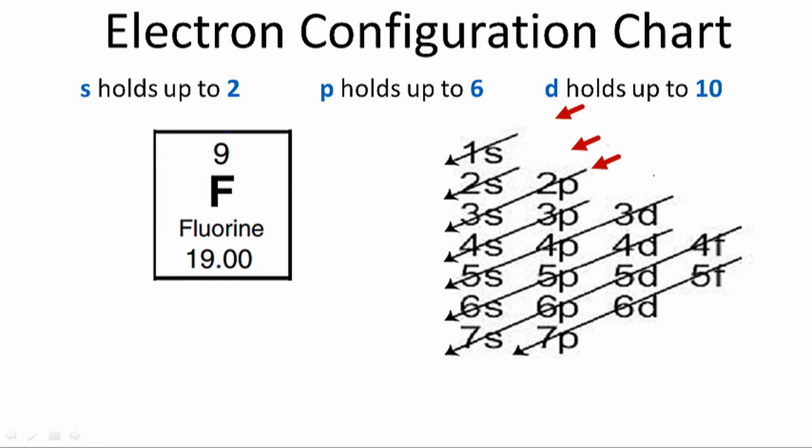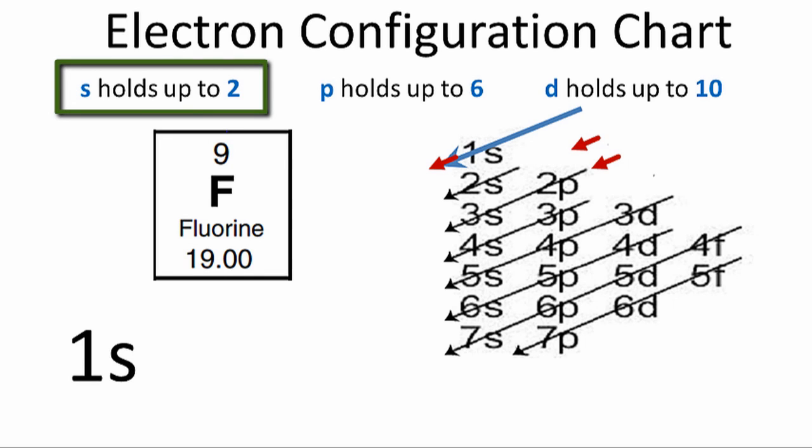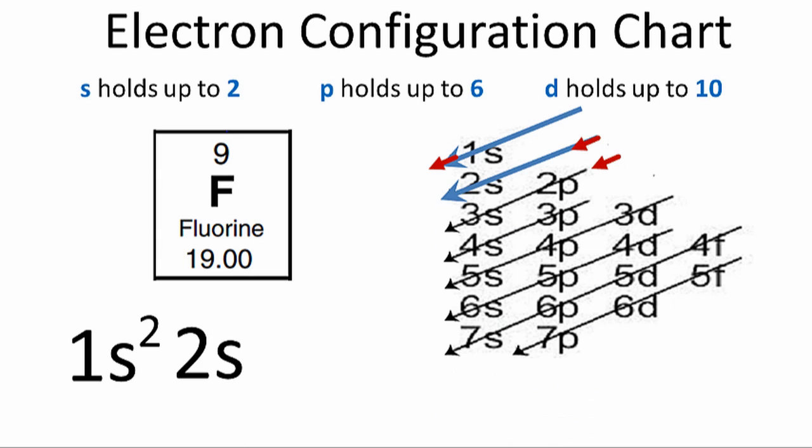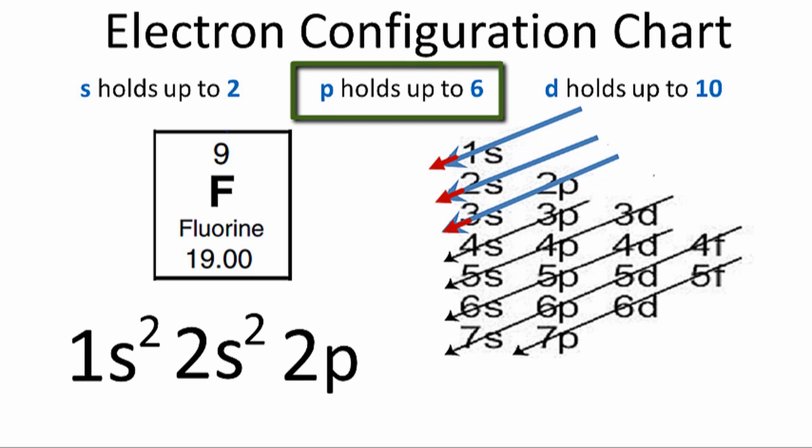So we'll use the chart on the right to determine the electron configuration for fluorine. We'll start by going down the first row, which is 1s, and we know that 1s orbitals can hold up to 2 electrons. So we'll put a 2 after the 1s. We'll go down the next row, we'll put 2 after the 2s. We've used 4 electrons so far. Then we'll go down the next row, where we have 2p, and p orbitals can hold up to 6.